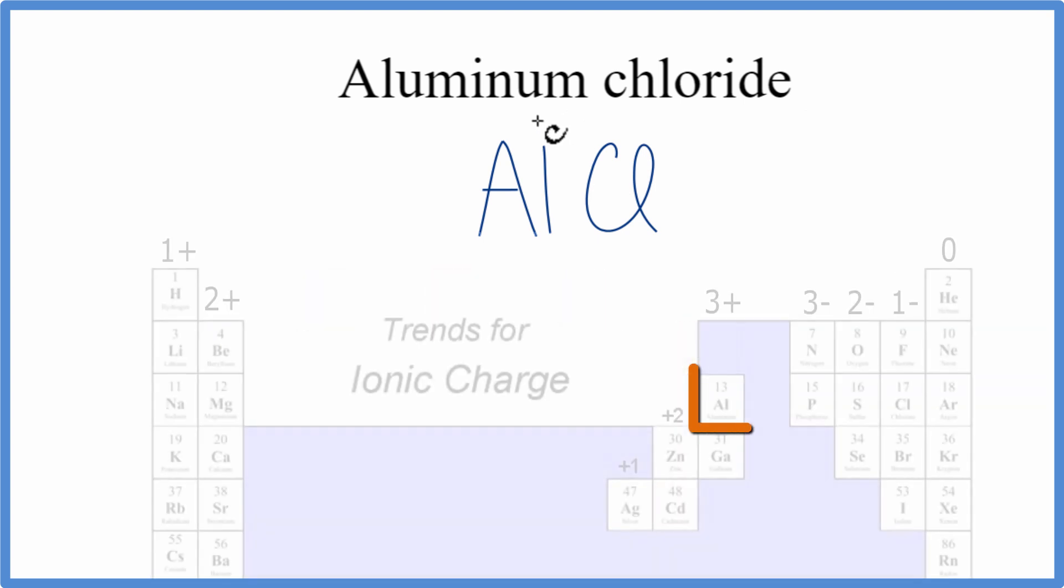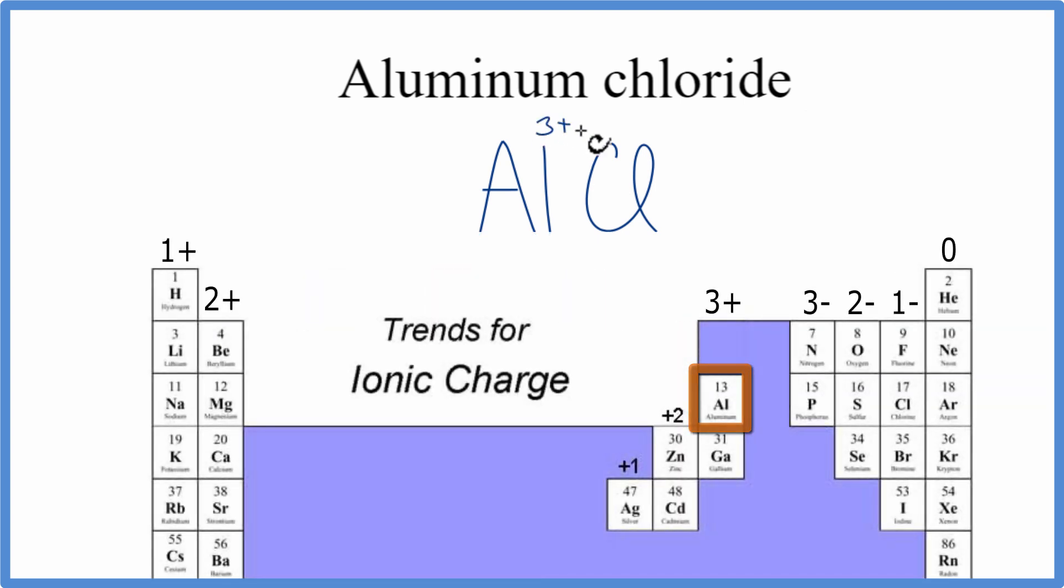So aluminum has a three plus charge, and then chlorine has a one minus. These charges should add up to zero, have a net charge of zero, because this is a neutral compound.